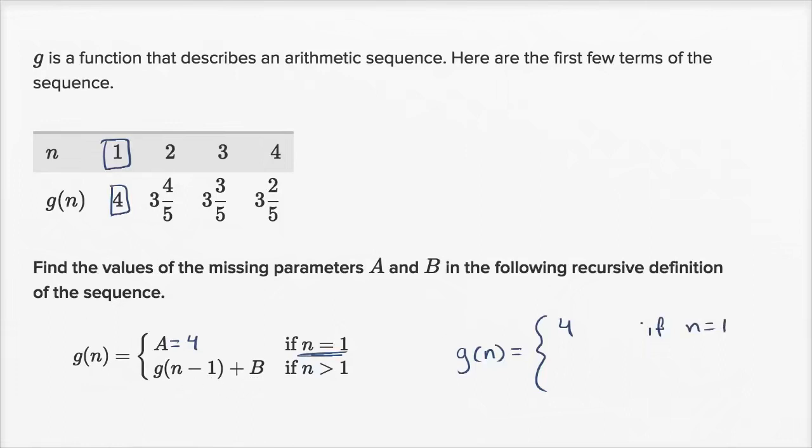Now let's think about the second line. It's saying it's going to be equal to the previous term, g(n-1). This means the (n-1)th term plus b will give you the nth term. Let's think about what's happening with this arithmetic sequence. When I go from the first term to the second term, I've subtracted 1/5.